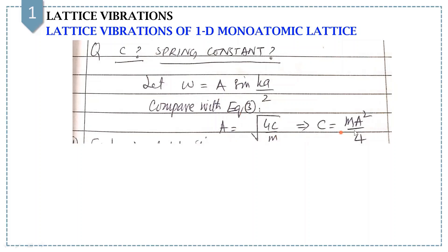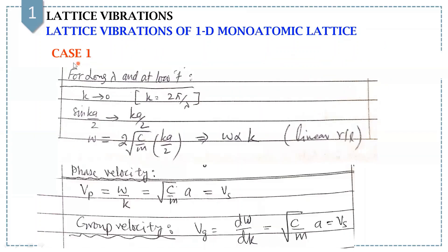To interpret equation number 3, let's take case 1 where we have a long wavelength — it means Ka tends to 0. By replacing sin(Ka/2) by Ka/2 in equation number 3, we get omega equals sqrt(C/M)·Ka, where you can see a linear relation between omega and K.